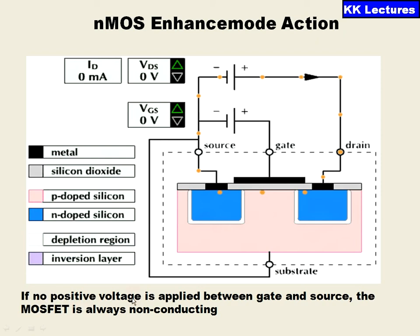If no positive voltage is applied between the gate and source, the MOSFET is always non-conducting. Whenever I am not applying any source voltage, there is no flow of electrons.